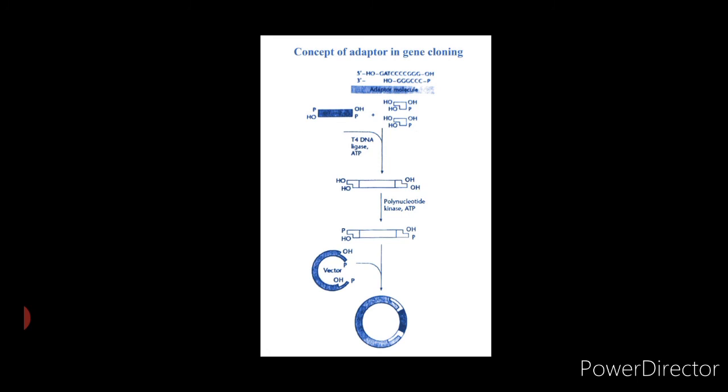Polynucleotide kinase catalyzes the transfer of the terminal phosphate group of ATP to the 5' hydroxylated terminal of DNA or RNA. This enzyme is frequently used to end label nucleic acid with P32.